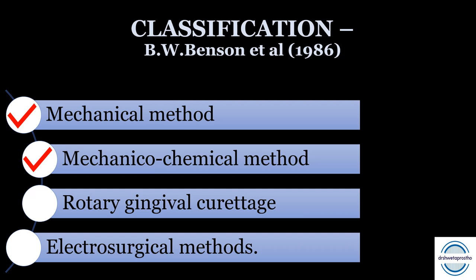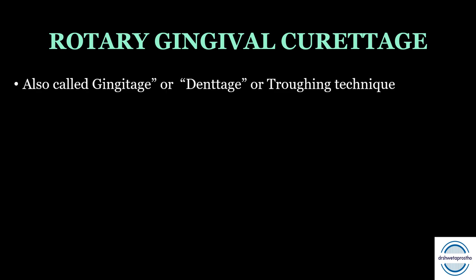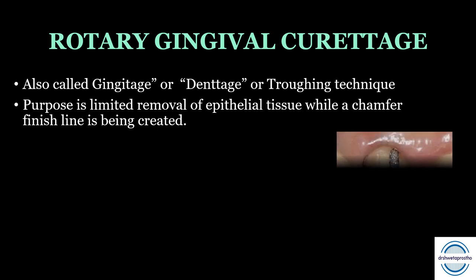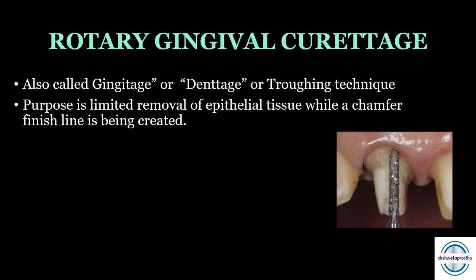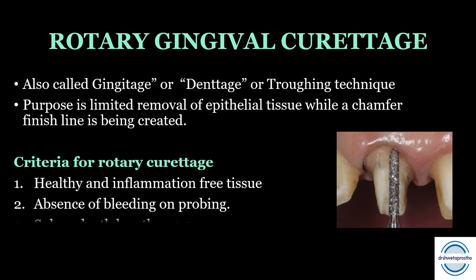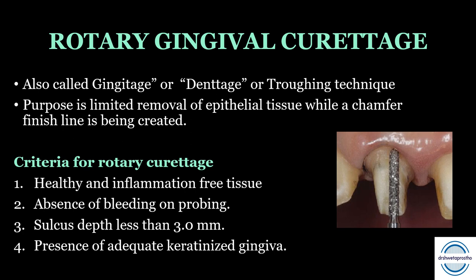Now let us discuss rotary gingival curettage, also called gingitage, dentage, or troughing technique. The purpose is limited removal of epithelial tissue in the sulcus while a chamfer finish line is created to give access to the finish line. Criteria: healthy, inflammation-free tissue; no bleeding on probing; sulcus depth less than 3 mm; and presence of adequate keratinized gingiva.